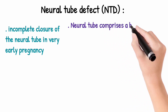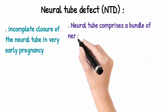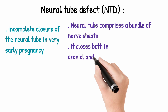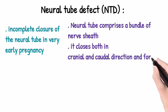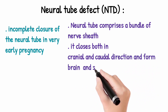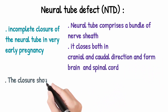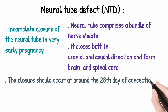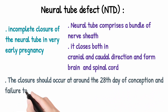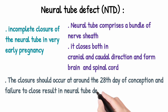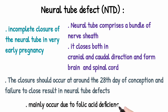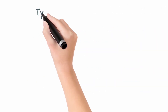What is the neural tube? It is a bundle of nerve sheath. It closes both cranially and caudally to form the brain and spinal cord. Closure should occur around the 28th day of conception, and if it fails, it results in neural tube defects, which occur due to folic acid deficiency.